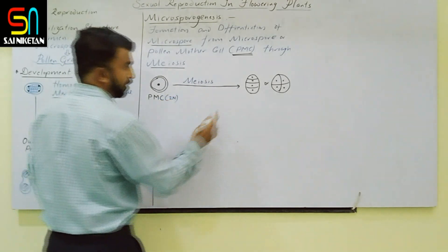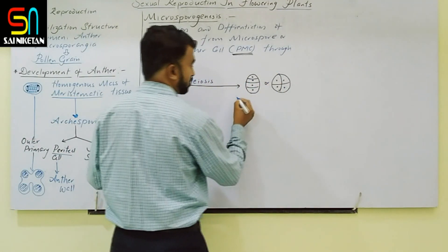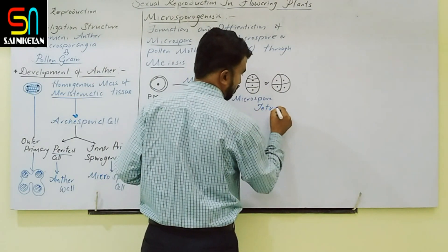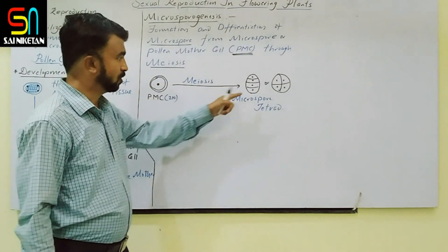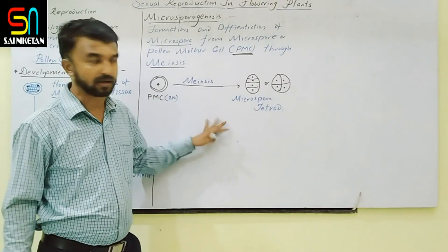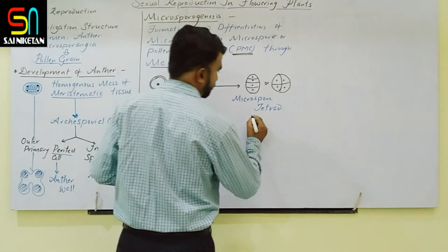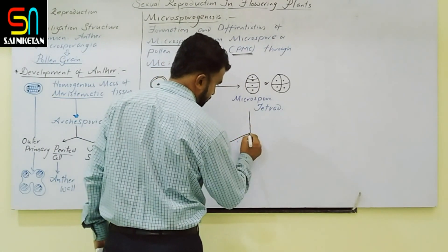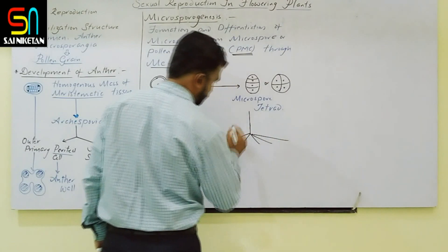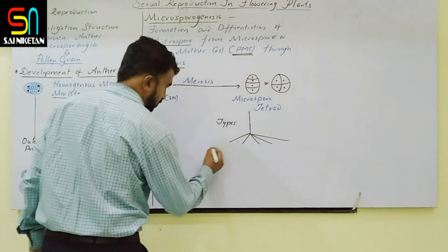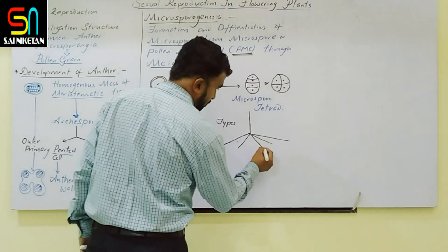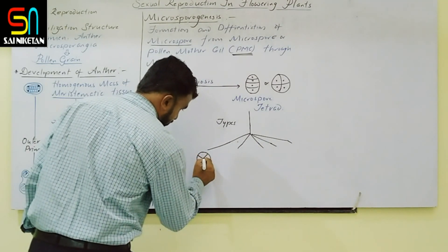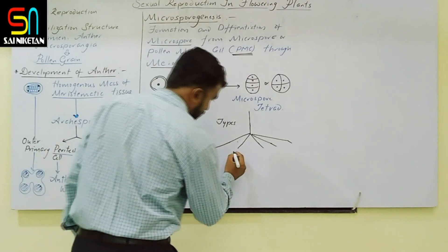The pollen mother cell is diploid. After meiosis, this composite structure of four microspores held together is called a microspore tetrad. The four microspores are still not separated at this stage. The microspore tetrad may be arranged in different configurations.